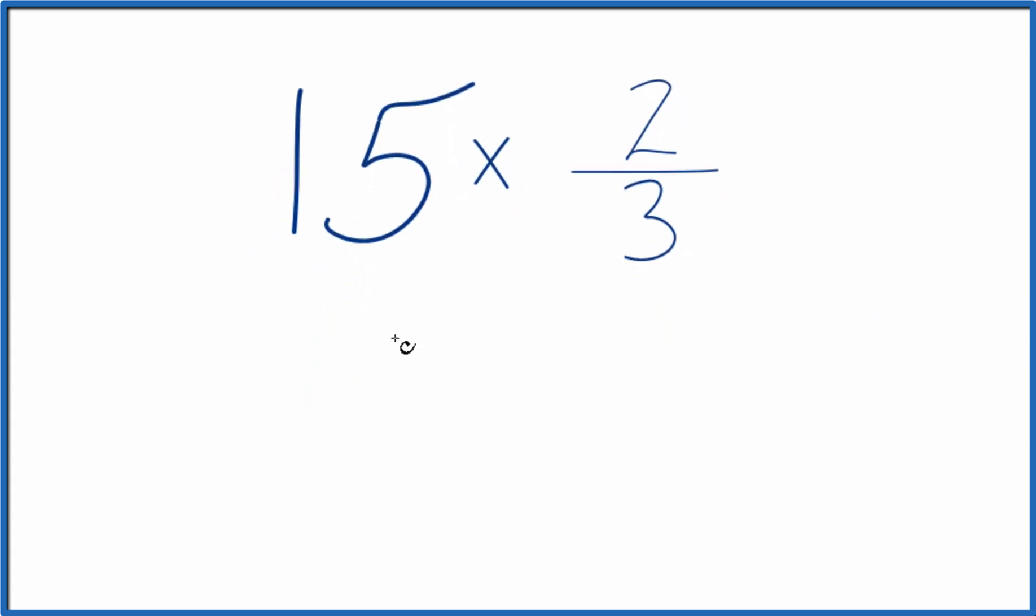Might be a little bit easier, though, to take 15. Think of this as 15 over 1. 15 over 1, that's just 15 divided by 1. Still 15, but now we have this fraction, and we can multiply that times 2 thirds.